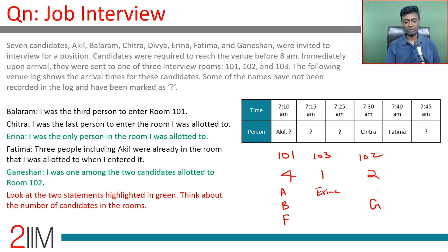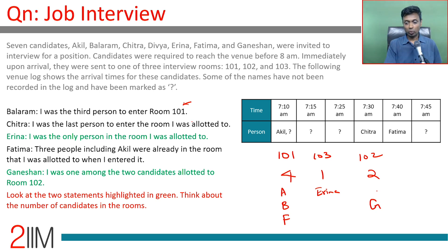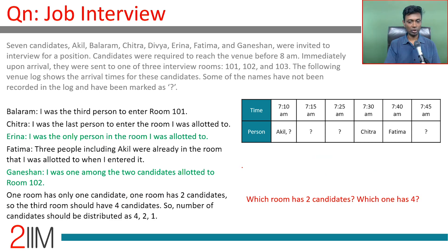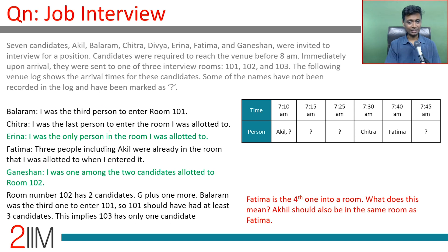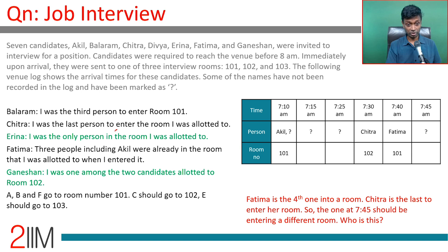Balram and Fatima are definitely in 101 because Balram said so, and Fatima says Akil was already among three people in her room — so A, B, and F are in 101. Erina is in 103, and Ganeshan is one of the two people in 102. Now let's build this out further. Chitra was the last person to enter the room she was allotted to.